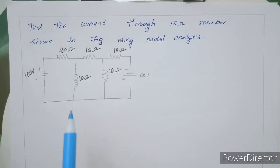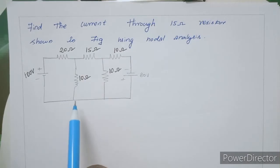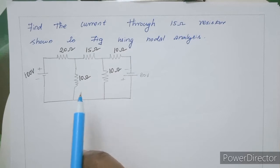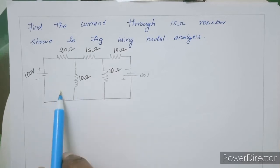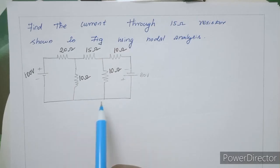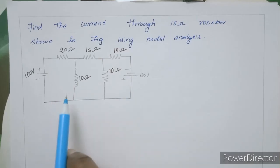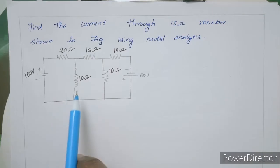This is how we solve nodal analysis. In the last class, we discussed a small problem using KVL analysis with 3 mesh equations and 3 unknowns. If we solve using nodal analysis, we only need 2 variables, which makes it easier.